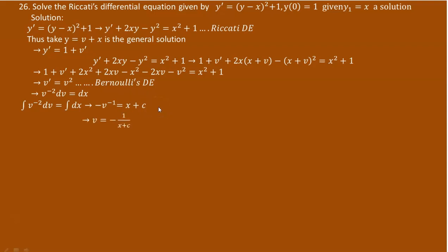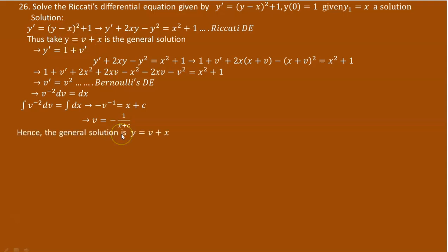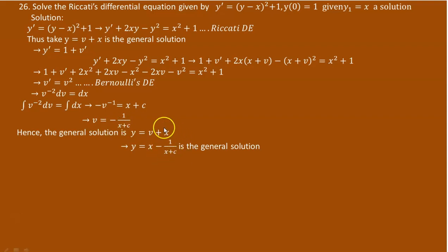So we obtain negative 1 over v equals x plus c. Taking the reciprocal, v equals negative 1 over (x plus c). Our intention was to determine what v is, because the general solution was written as y equals v plus x. Now that we have determined v equals negative 1 over (x plus c), the general solution is y equals x minus 1 over (x plus c).